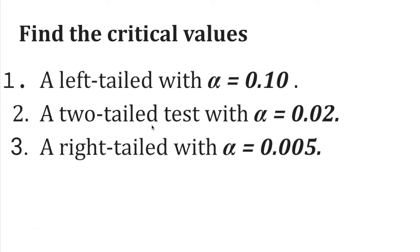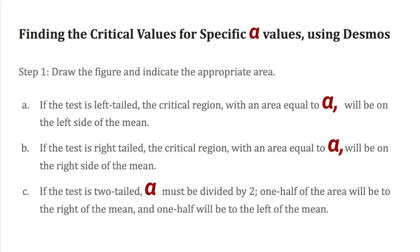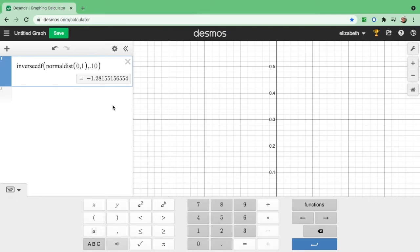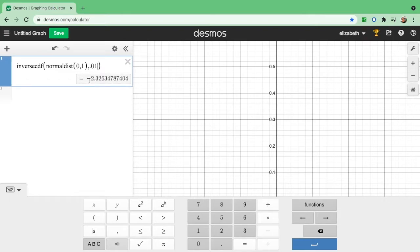For the second given, this is a two-tailed test with A equals 0.02. According to the rule, if it's a two-tailed test, A must be divided by 2. So 0.02 divided by 2 gives 0.01 — we will use 0.01. The resulting Z value is negative 2.32, or rounded, negative 2.33.